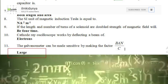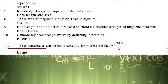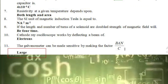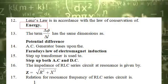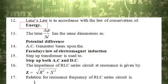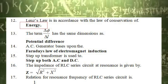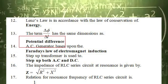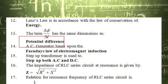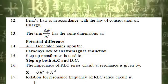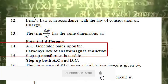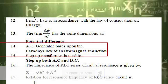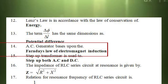The 11th statement is: a galvanometer can be made sensitive by making the factor BNA divided by C large. The correct answer is large. The 12th statement is: Lenz's law is in accordance with the law of conservation of energy. The 13th statement is: the term delta phi divided by delta L has the same dimensions as. The correct answer is potential difference. The 14th statement is: an AC generator is based upon. The correct answer is Faraday's law of electromagnetic induction.